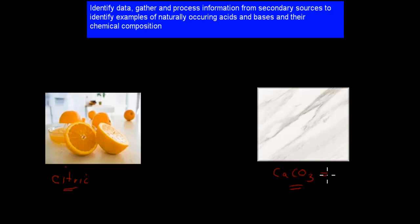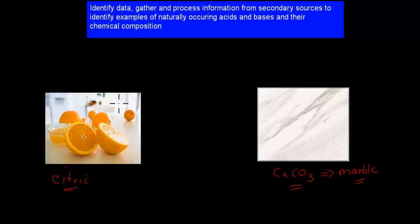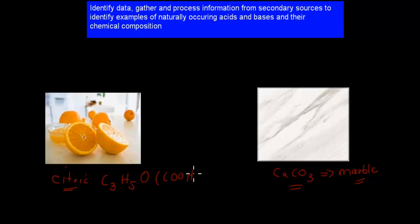Calcium carbonate is naturally occurring, and we can find it in, for example, marble, which gets created under extremely hot conditions. These are your two examples: one of a naturally occurring acid, and one of a naturally occurring base. The structural formula for citric acid is C3H5O(COOH)3, and the chemical formula for calcium carbonate is CaCO3.